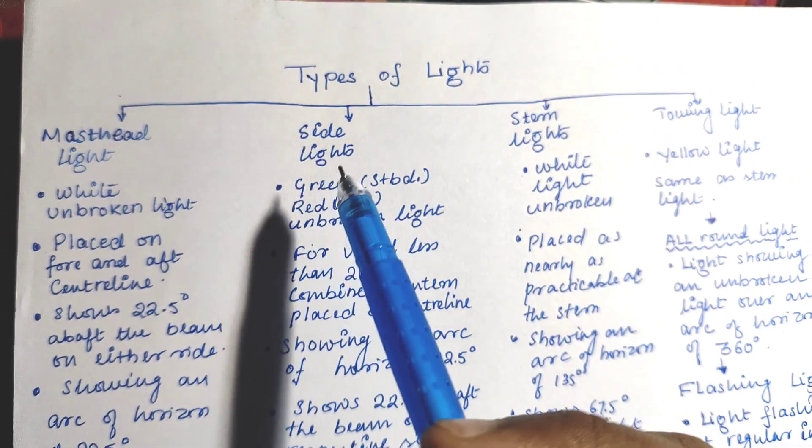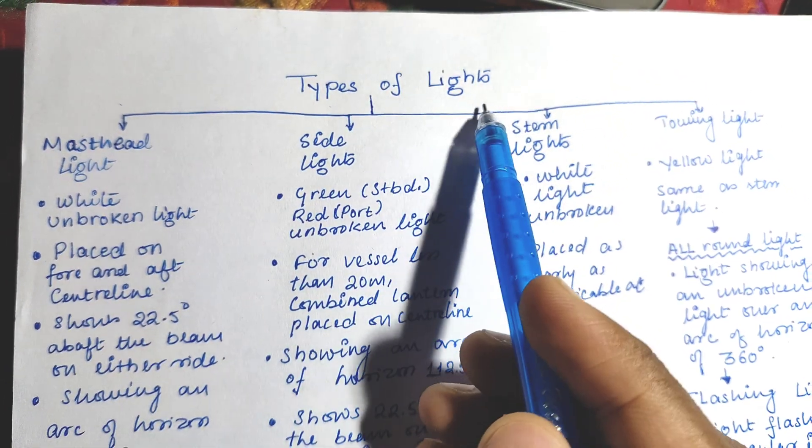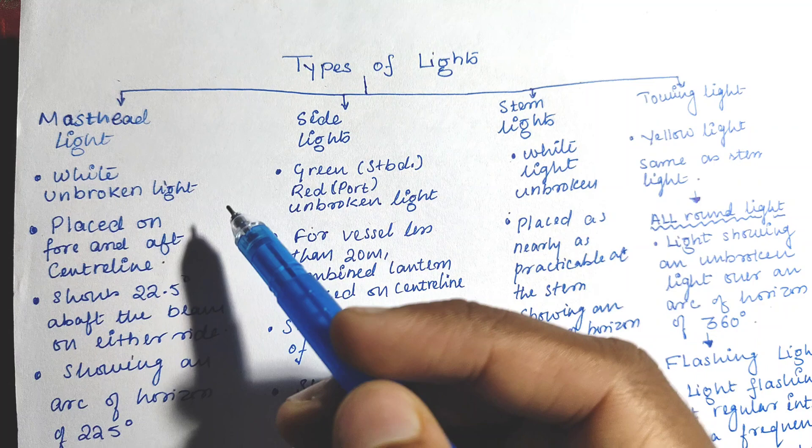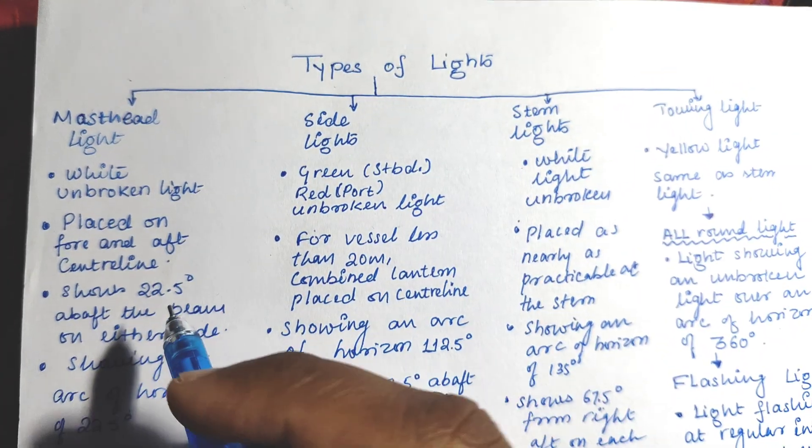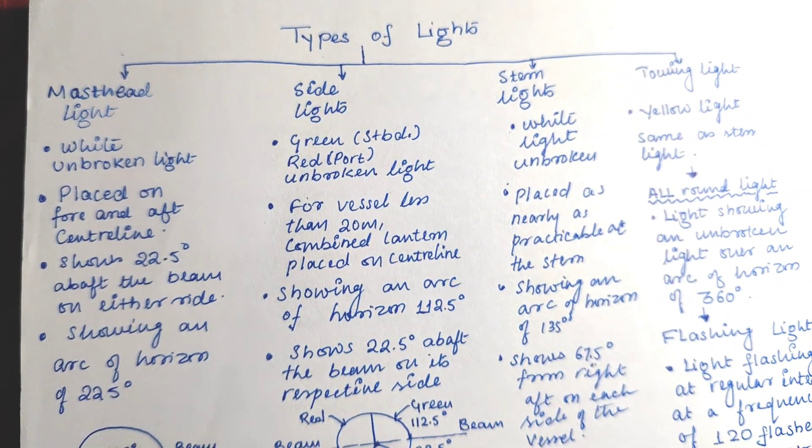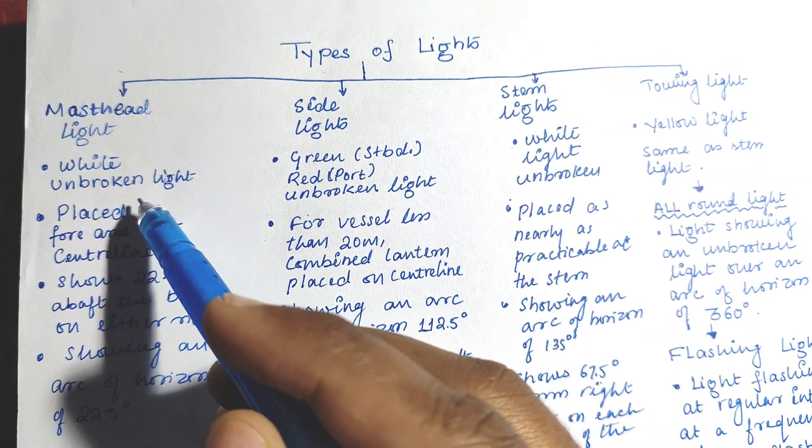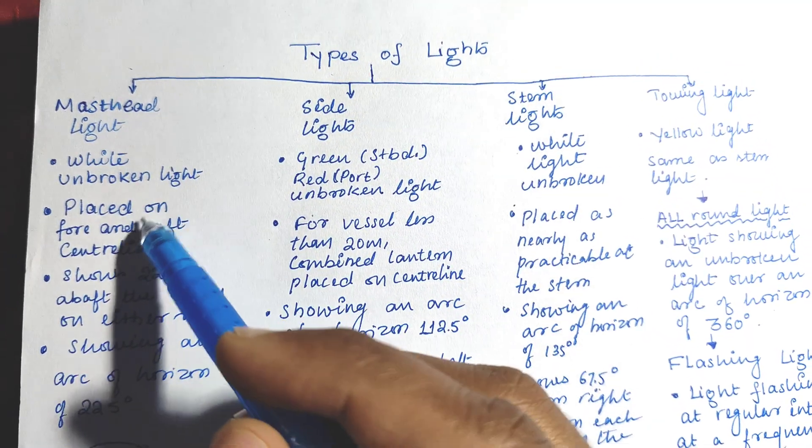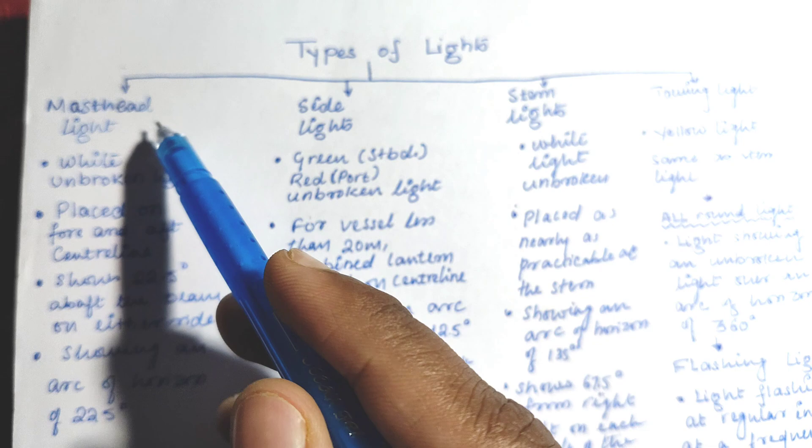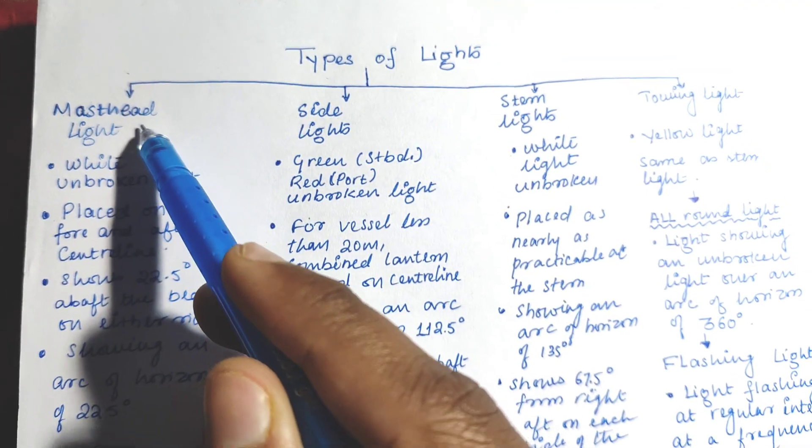Hello and welcome. In this video, I am going to discuss types of lights used on boats and ships. These definitions are found in COLREG Rule Number 21. We will see a brief overview and the differences between these types of lights.